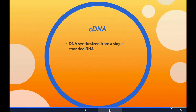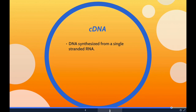Complementary DNA is DNA synthesized from a single-stranded RNA in a reaction catalyzed by the enzyme reverse transcriptase. It is often used to clone eukaryotic genes in prokaryotes when scientists want to express a specific protein in a cell that does not normally express that protein, known as heterologous expression — they transfer the complementary DNA coding for that protein to the recipient cell. Complementary DNA is also produced naturally by retroviruses such as HIV-1 and HIV-2, and is integrated into the host genome where it creates a provirus.